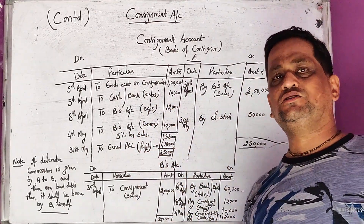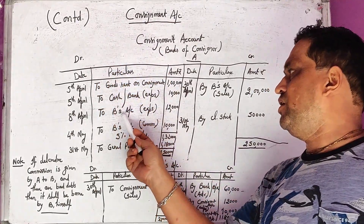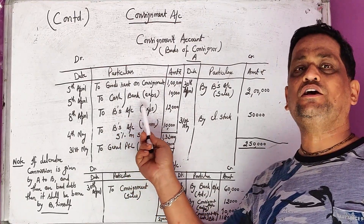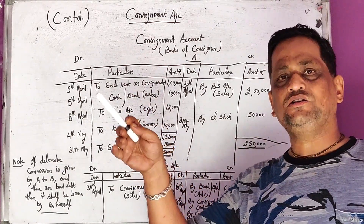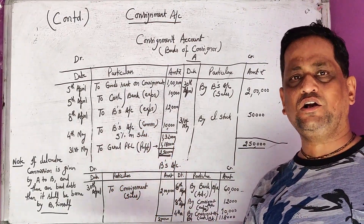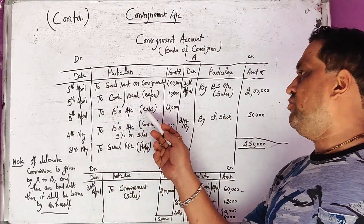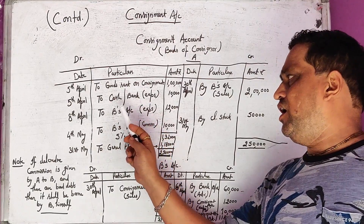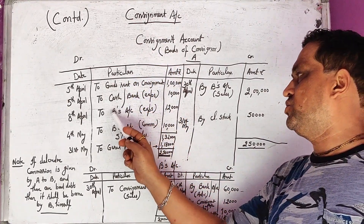The third transaction involves the consignee taking delivery of goods. When taking delivery, he has to pay certain expenses: number one is unloading cartage, which is direct; then godown rent for storage; and also advertisement expenses. All expenses, whether direct or indirect, are debited in the consignment account. The entry is: consignment account debited to B's account. If the consignor has paid B 1,000 for example, then this entry is debit.